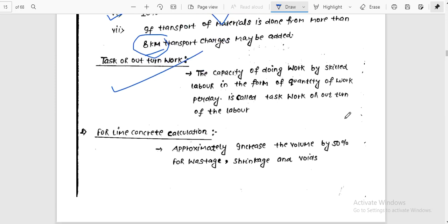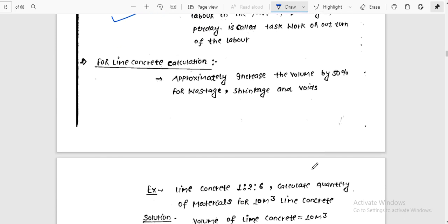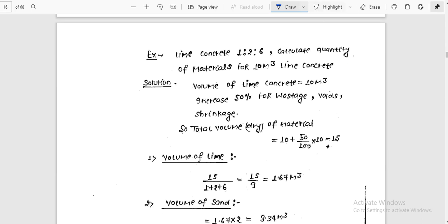For lime concrete calculation, approximately increase the volume 50% for waste. So in lime concrete calculations, 50% increase is needed because of waste.